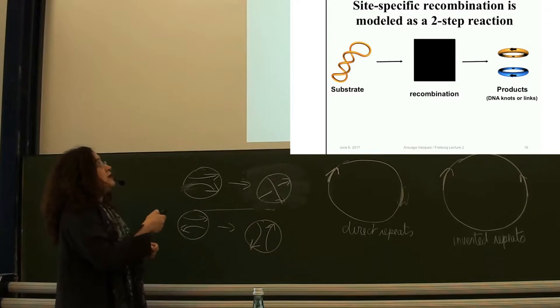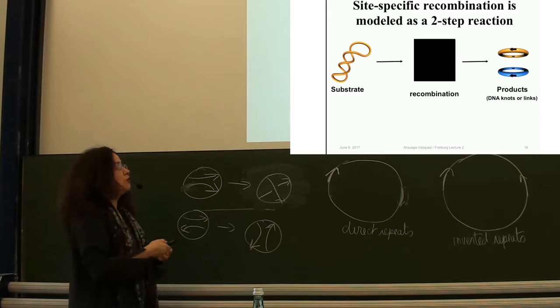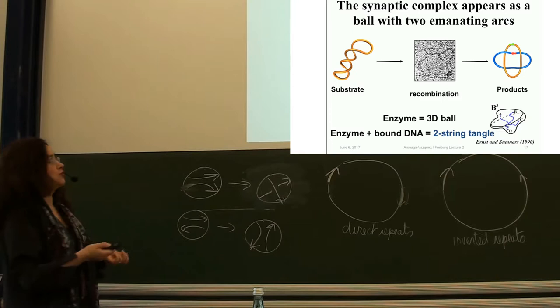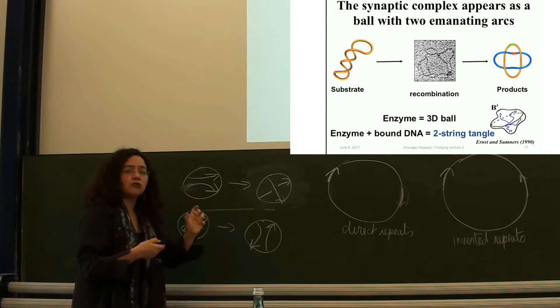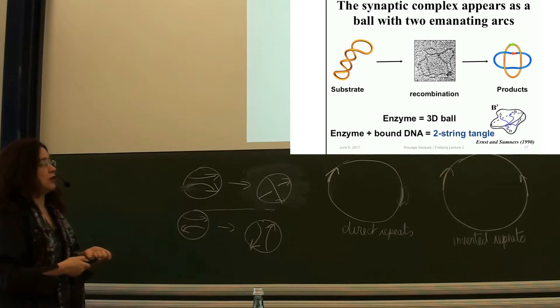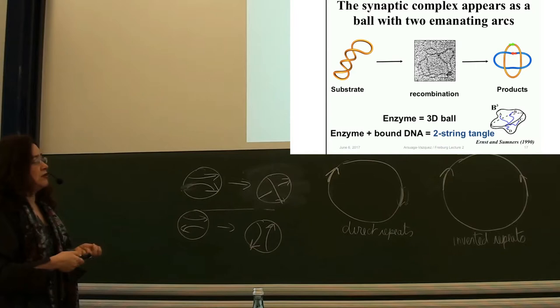The substrate goes into the black box — the enzyme doing its job — and outputs a product or range of products. Here is one example where you start with an unknot and end up with a four-crossing torus link. If you try to look under the microscope to figure out what that black box looks like, you see a dark spot — the enzymatic complex. This inspired the Tangle method developed by DeWitt Sumners and his then-student Klaus Ernst, now a professor at the University of Western Kentucky. They developed this method in the 1990s.